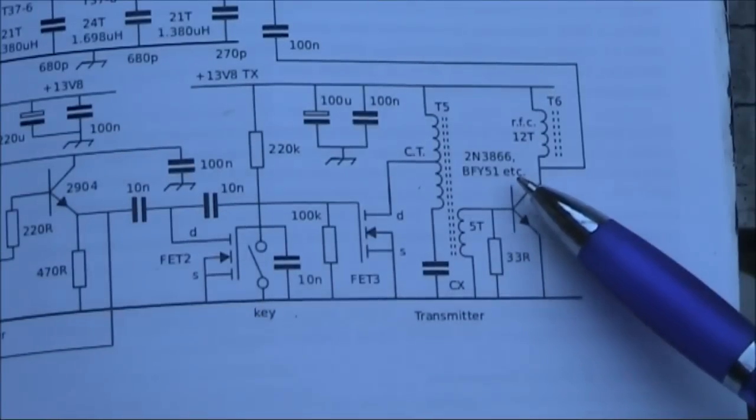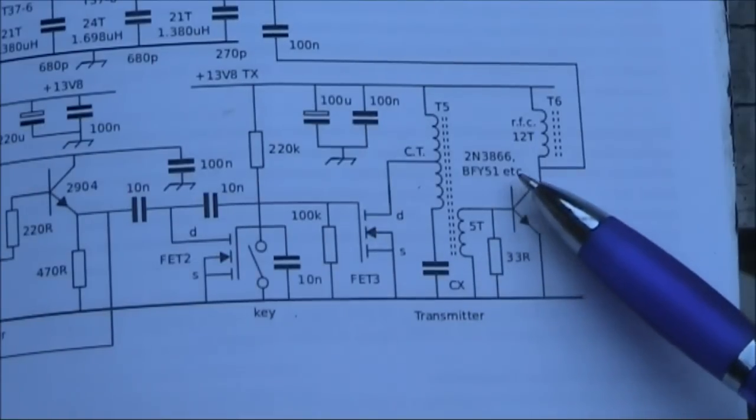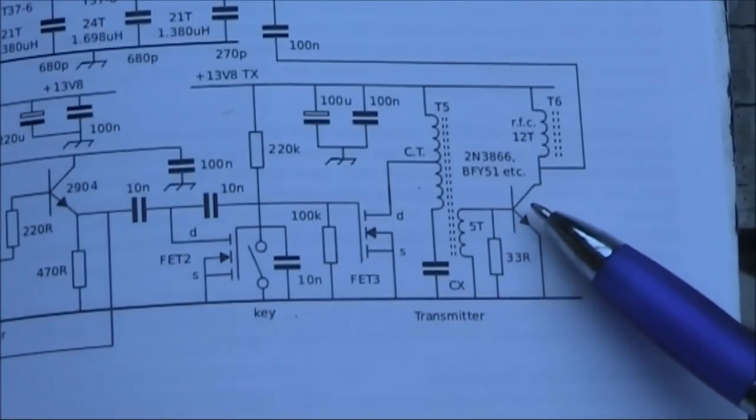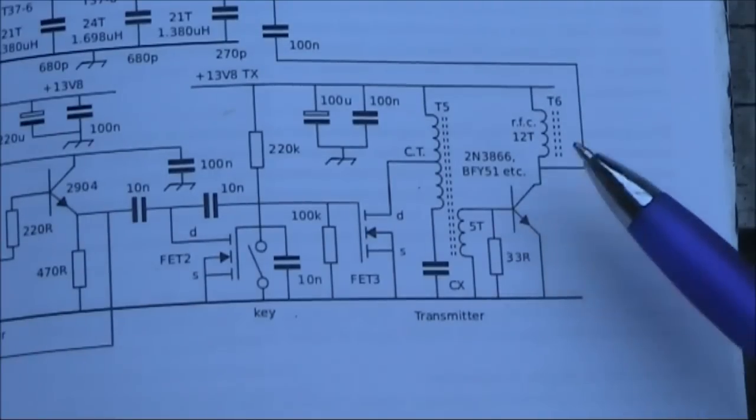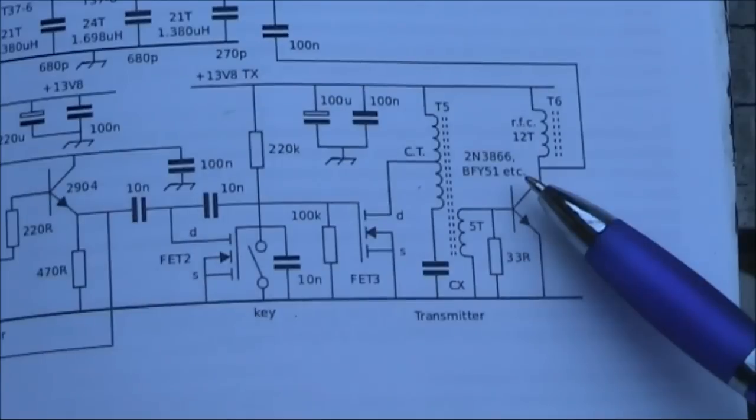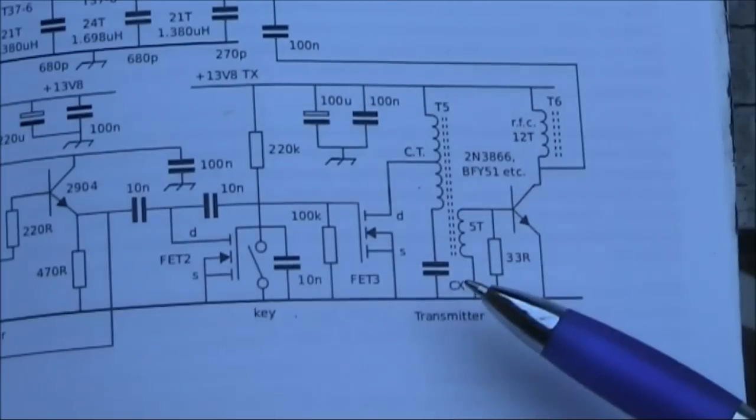So the output transistor in this case is critical if you're going to be modifying this rig to go to a higher HF band. Not so critical if you're going to go down to 80 or 160 meters with it.